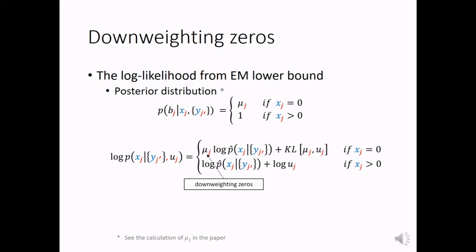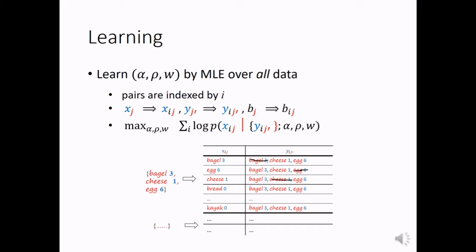Let's see how we learn the model. We learn model parameters by maximizing the log likelihood over all data. Remember, we have many baskets. And we can stratify each basket to get many pairs for this conditional distribution. So, we have many pairs to learn the model parameters. And these pairs are indexed by i.